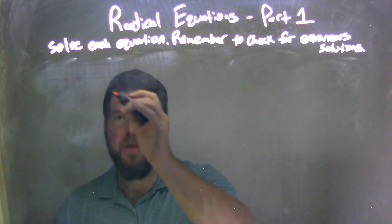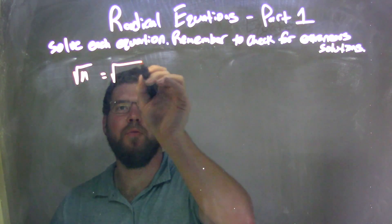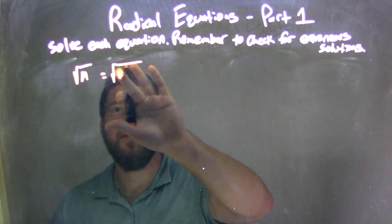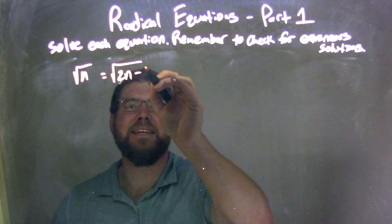So if I was given this equation here, the square root of n equals the square root of 2n minus 6.